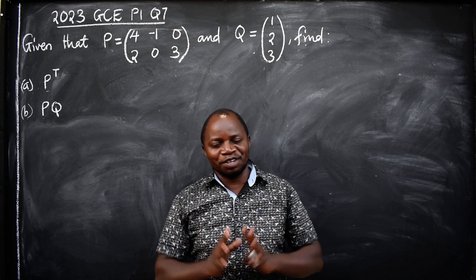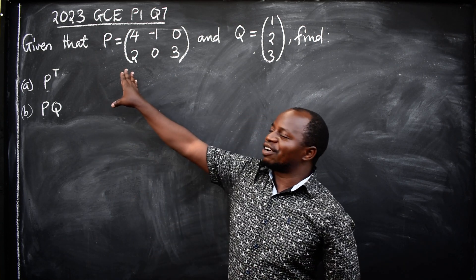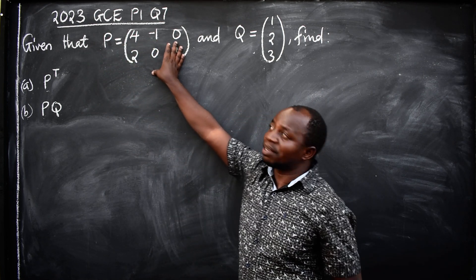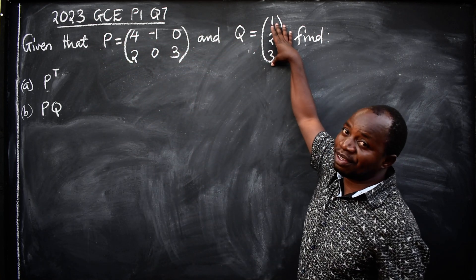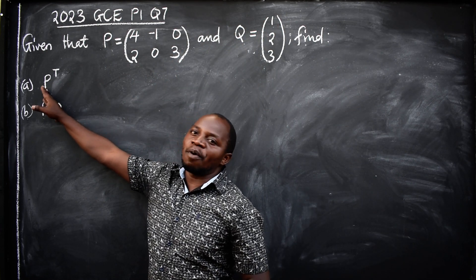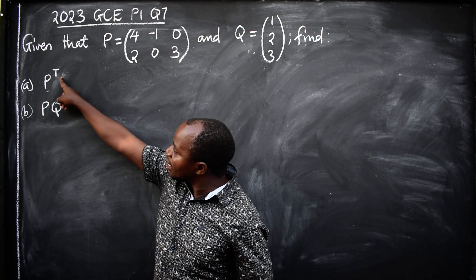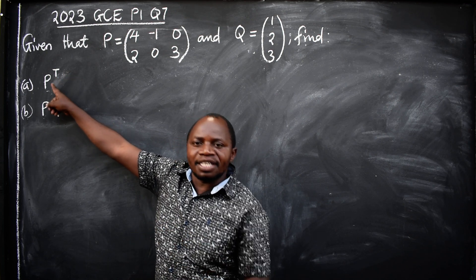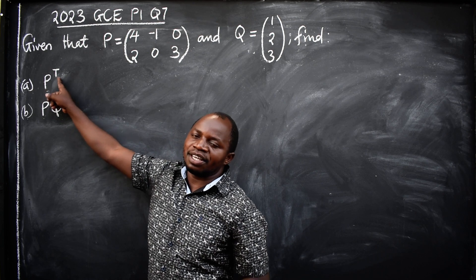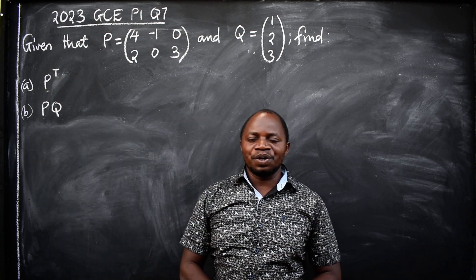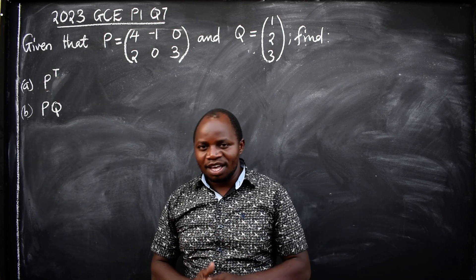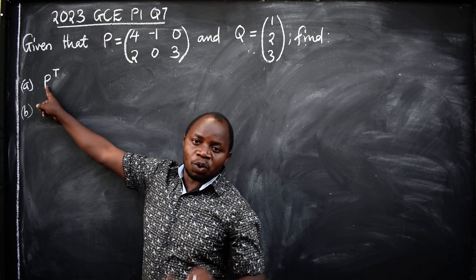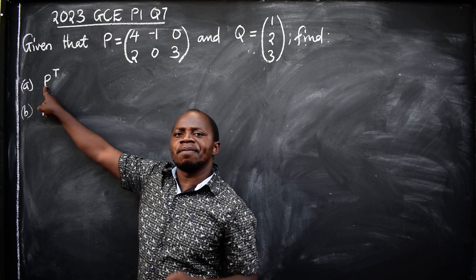Let's now understand. We've been given matrix P, which is this one, matrix Q, this one. We are told to transpose. Whenever you see T, P^T, any matrix raised to the power T, then they are asking you to transpose that matrix. So in this case we have been told to transpose matrix P.